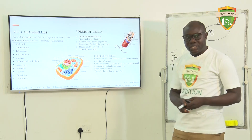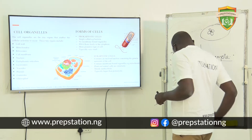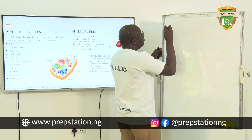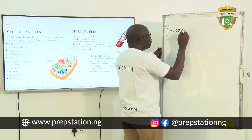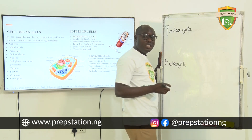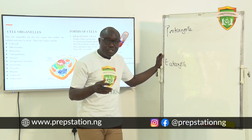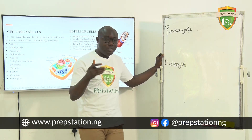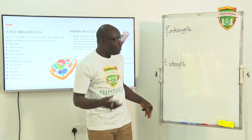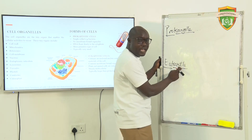Let's move to the forms of cells — different forms of cells. We have the prokaryotic cells and we have the eukaryotic cells. Now, there's no big word in biology that can't be broken down into pieces. Every big word in biology can be broken down. So when we hear 'prokaryotic,' don't be disturbed. The word 'pro' and the word 'eu,' and the word 'karyote' is present in both words. 'Karyote' means nucleus.